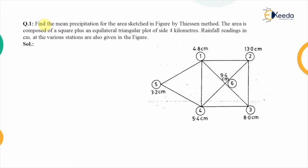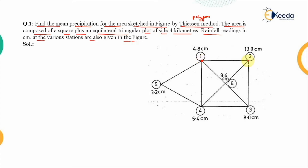The first problem states: find the mean precipitation for the area sketched in the figure by the Thiessen polygon method. The area is composed of a square plus an equilateral triangular plot of side 4 kilometers. The rainfall readings in centimeters at the various stations are given in the figure. There are six stations total — one, two, three, four, five, and six — each marked with different rainfall readings.